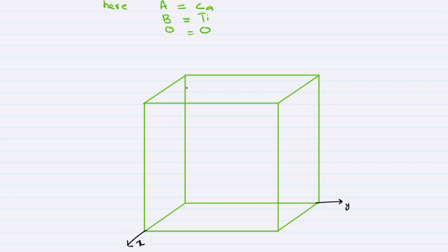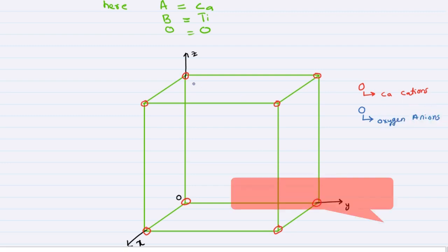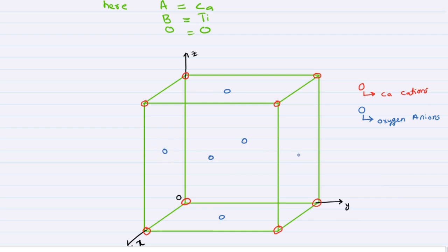This is the x direction, this is the y direction, and this is the z direction, with origin O. The red circles indicate calcium cations located at the eight corners of the cube. The blue circles indicate oxygen anions located at the six face centers. The remaining circle indicates the titanium cation located at the center of the cube, which is the octahedral position.